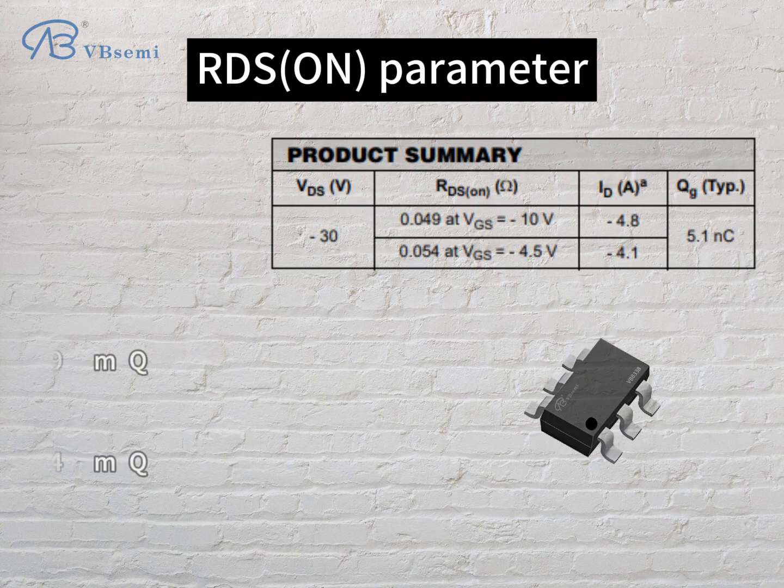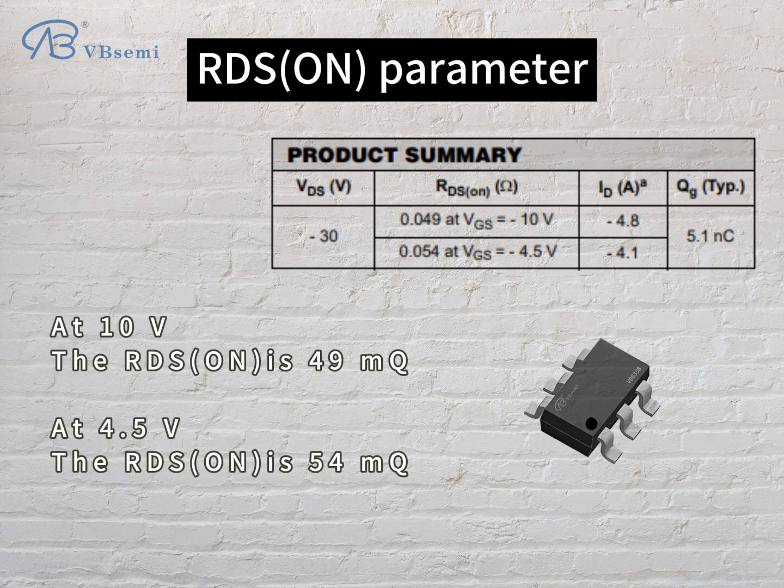RDS-ON parameter: at 10V, the RDS-ON is 49mΩ; at 4.5V, the RDS-ON is 54mΩ.